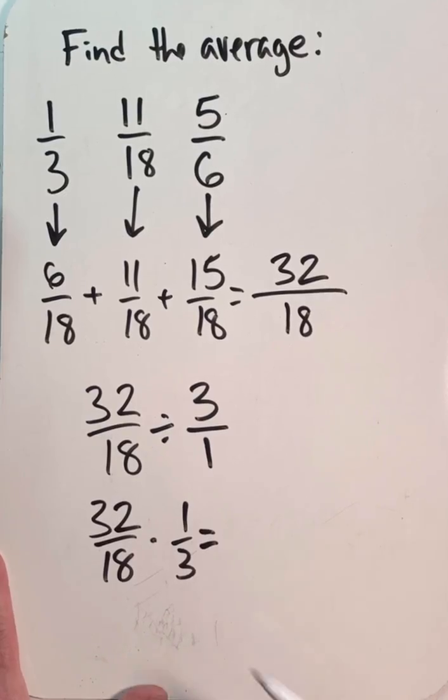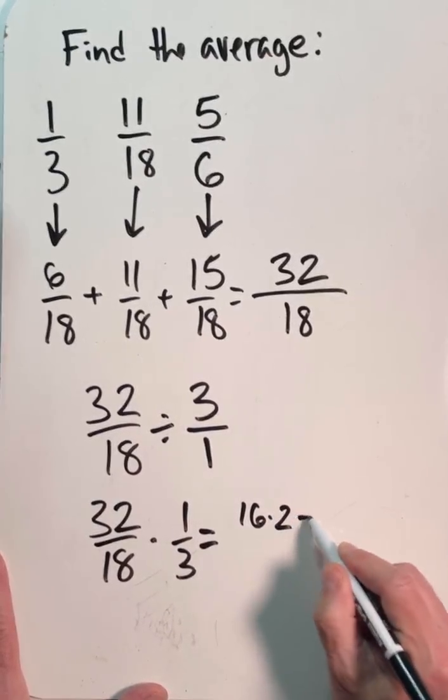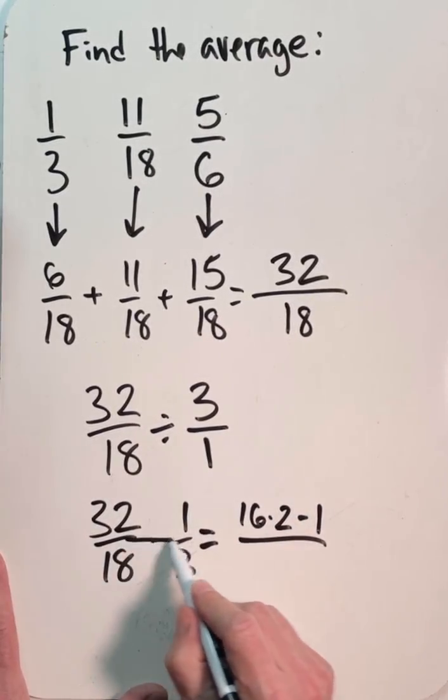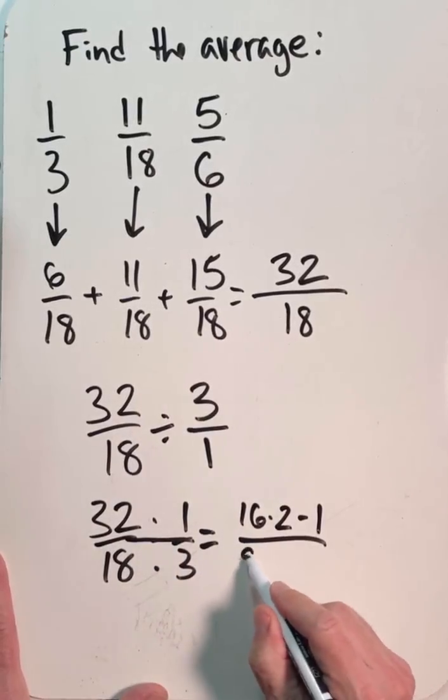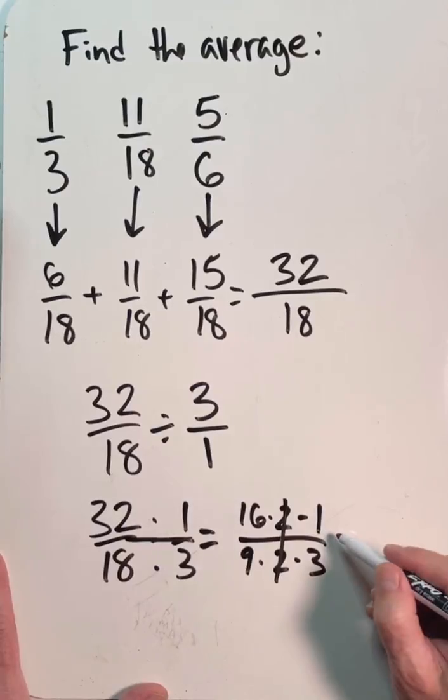When you want to do this, again, we can break these numbers up according to their factors. And I know that 32 is 16 times 2. And again, I can extend the fraction bar here. And 18 is 9 times 2. So already, I can cancel out my 2s.